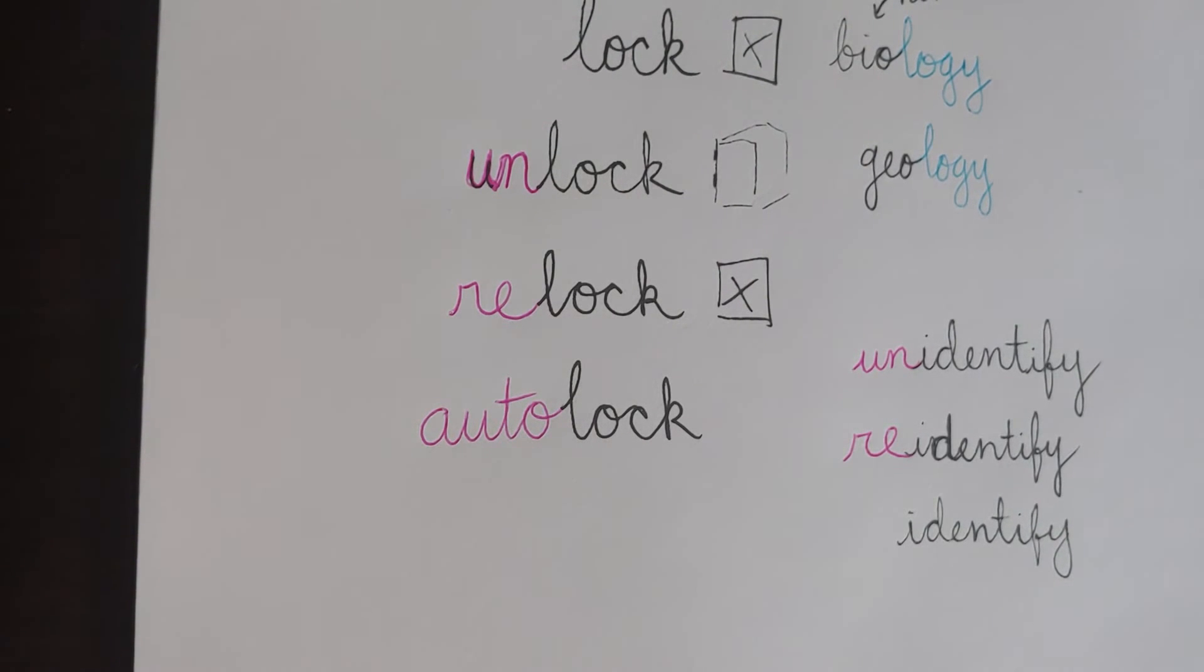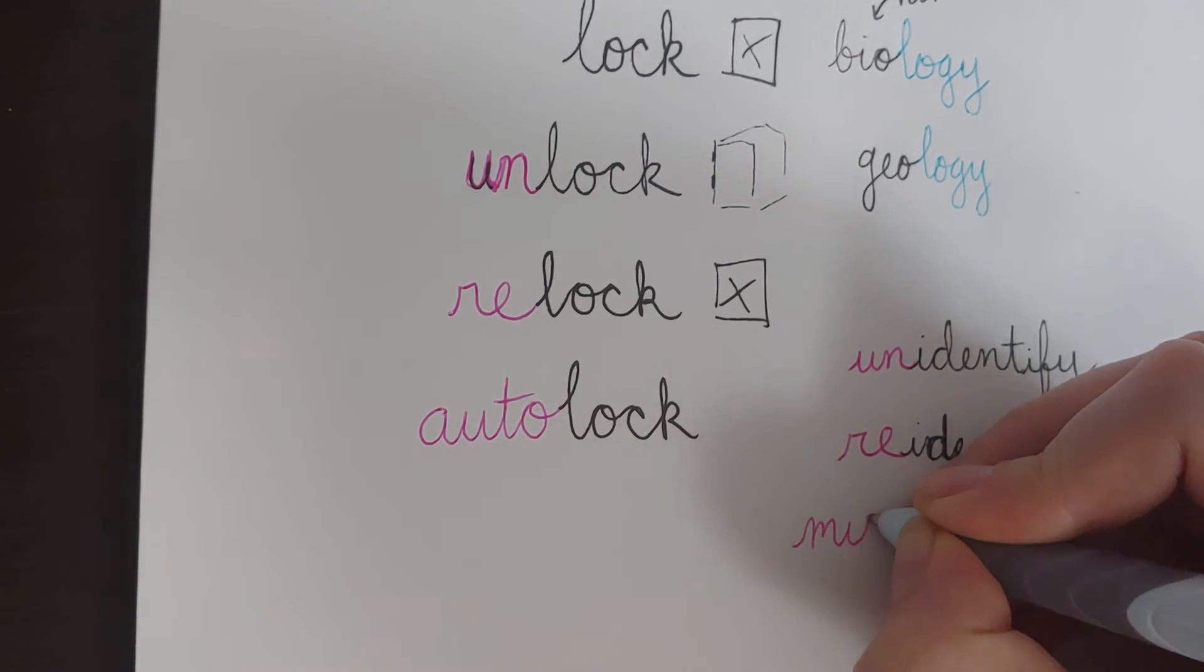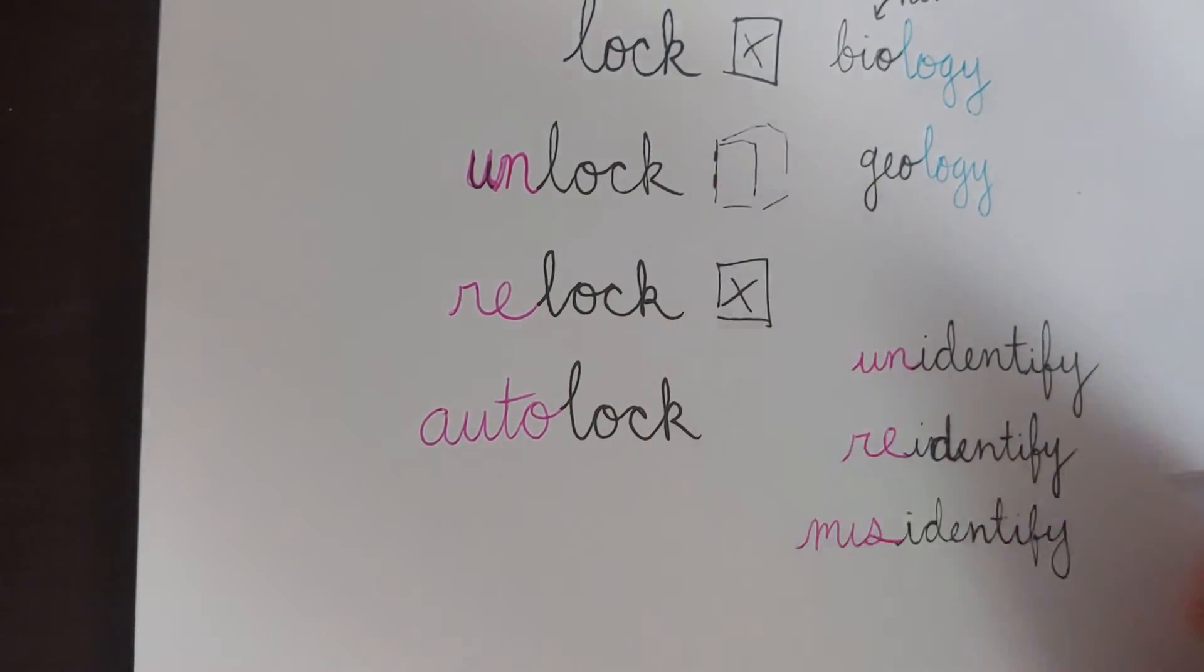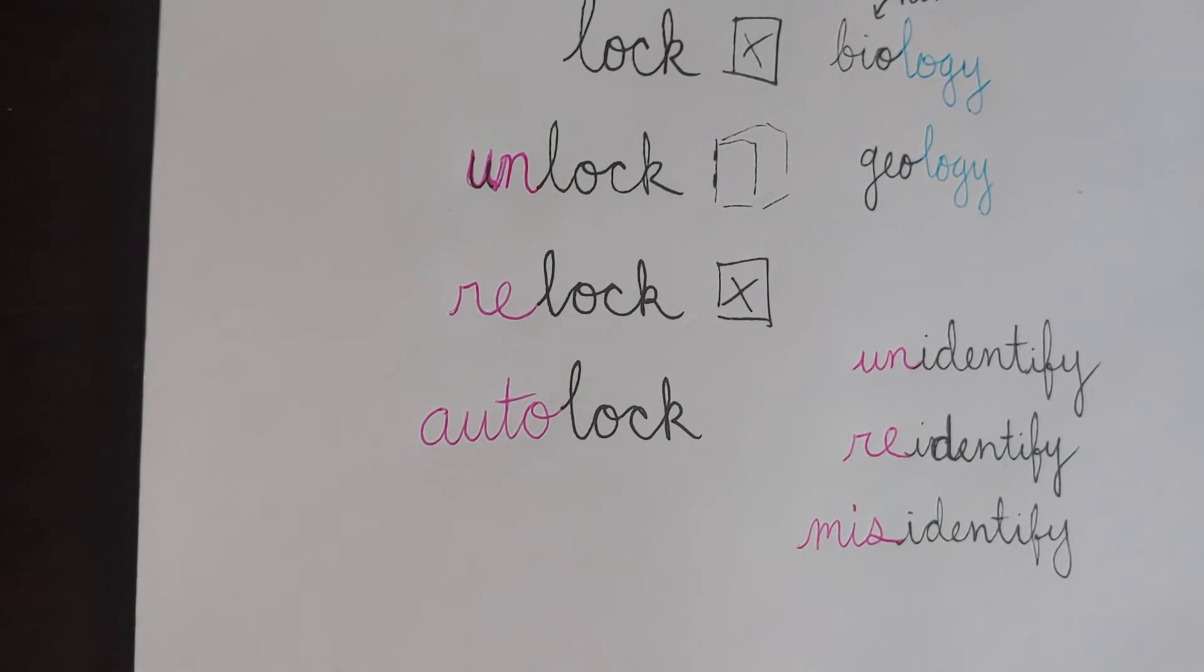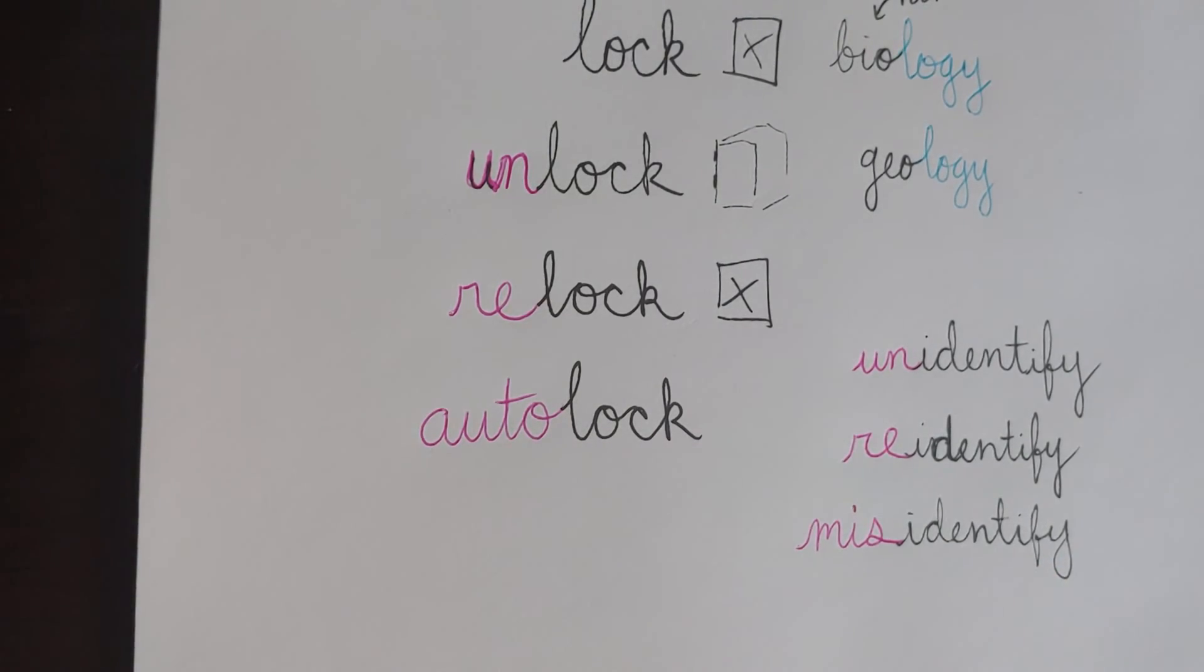Unidentify, re-identify. How about when you walked in with that plant and said, I'm pretty sure this is a Douglas fir. If I knew it wasn't, I might say, I believe you have misidentified that plant. The prefix miss means wrongly. So to misidentify something would be to wrongly identify it.